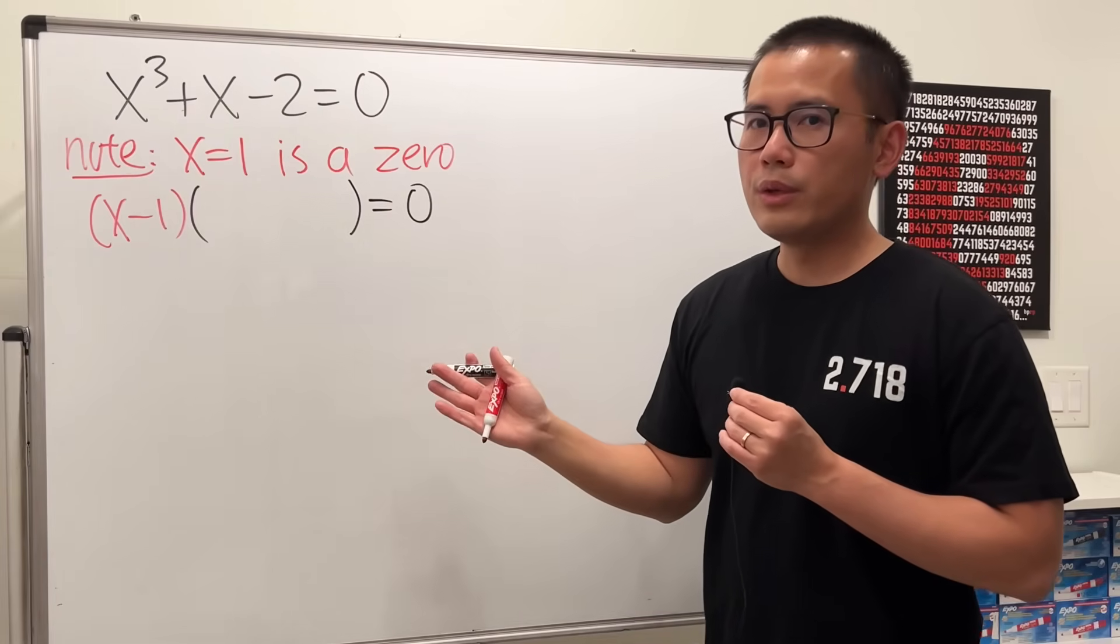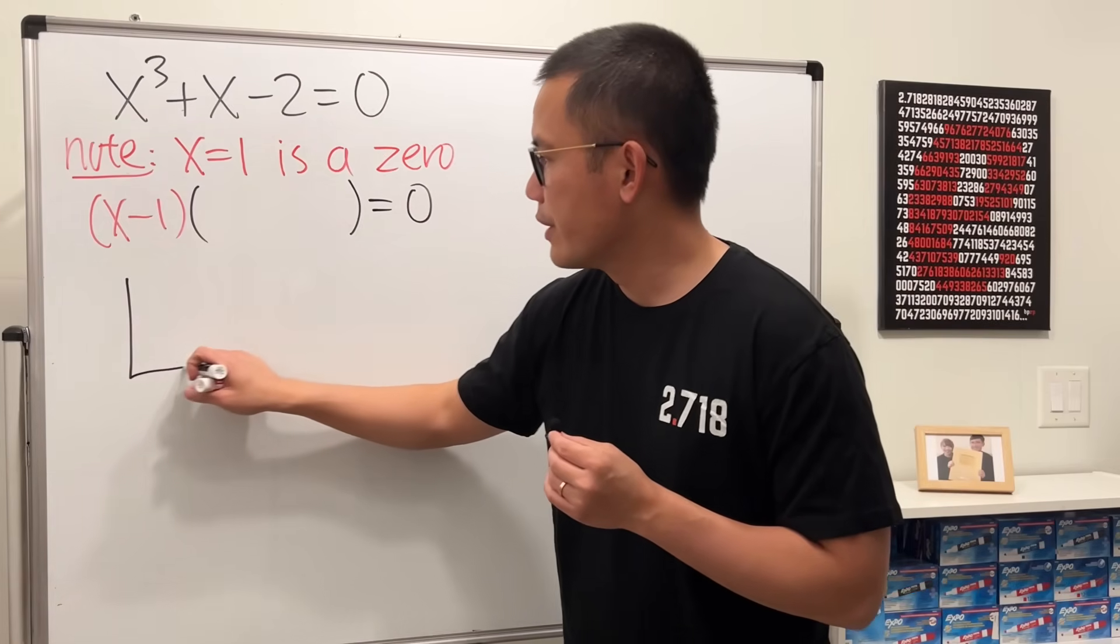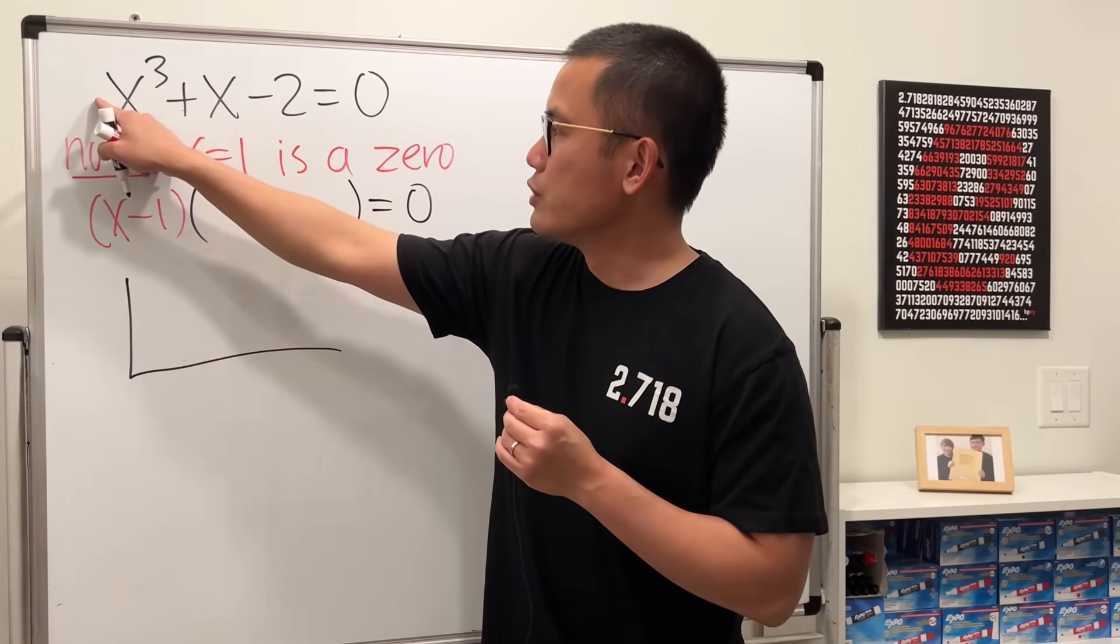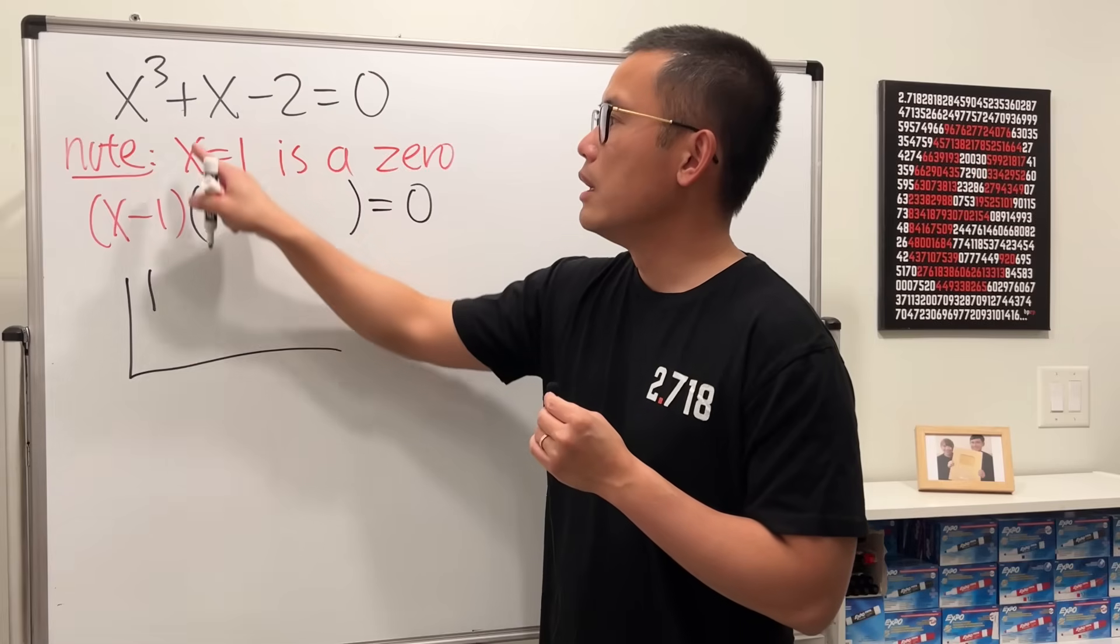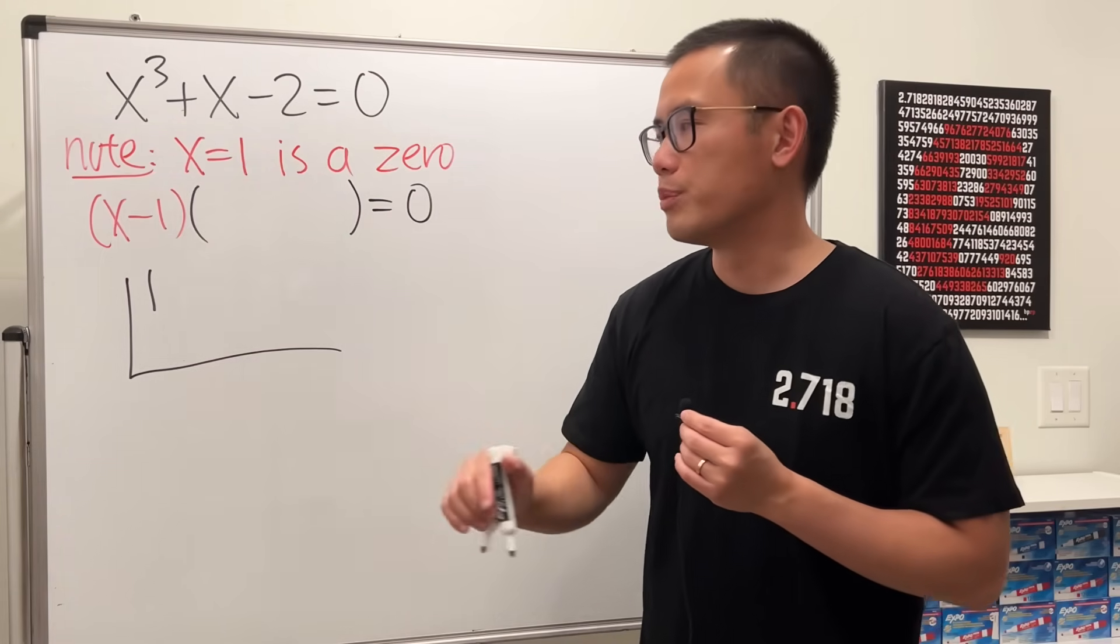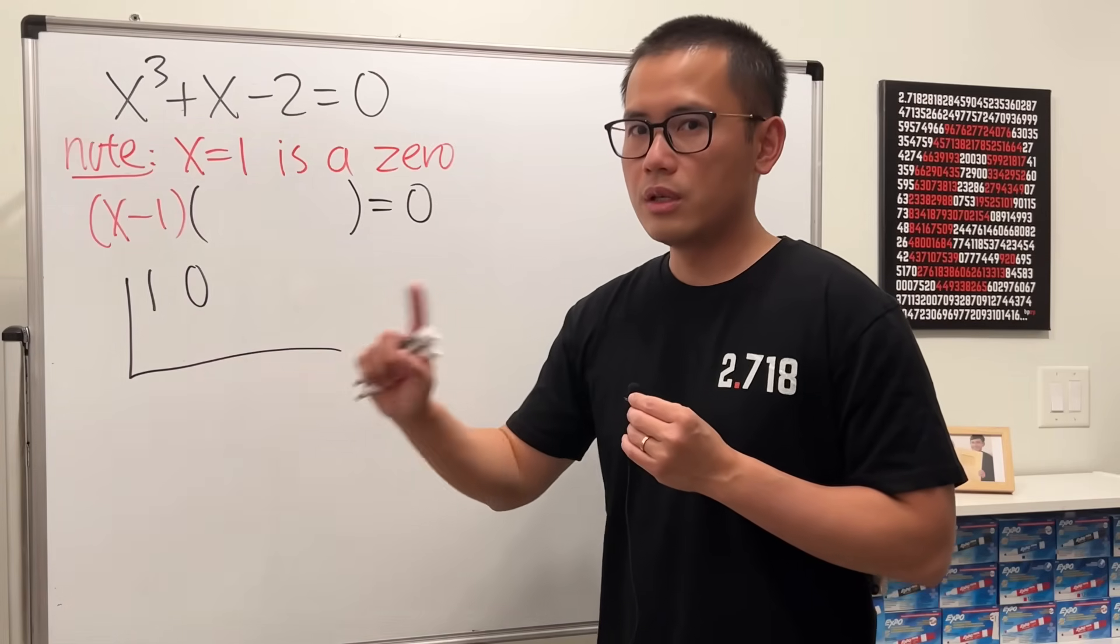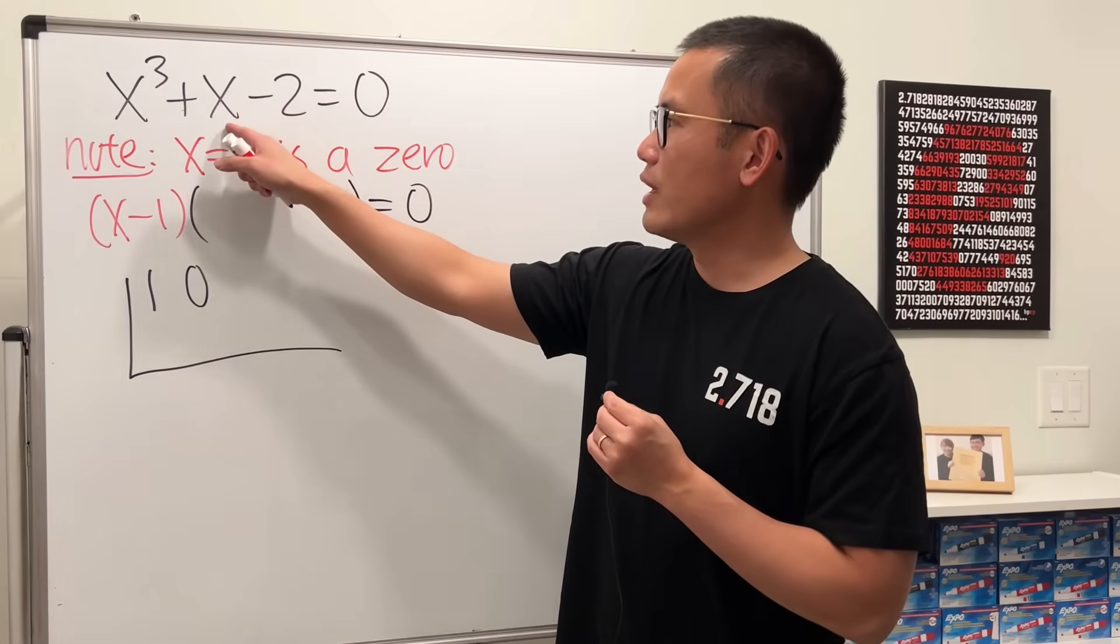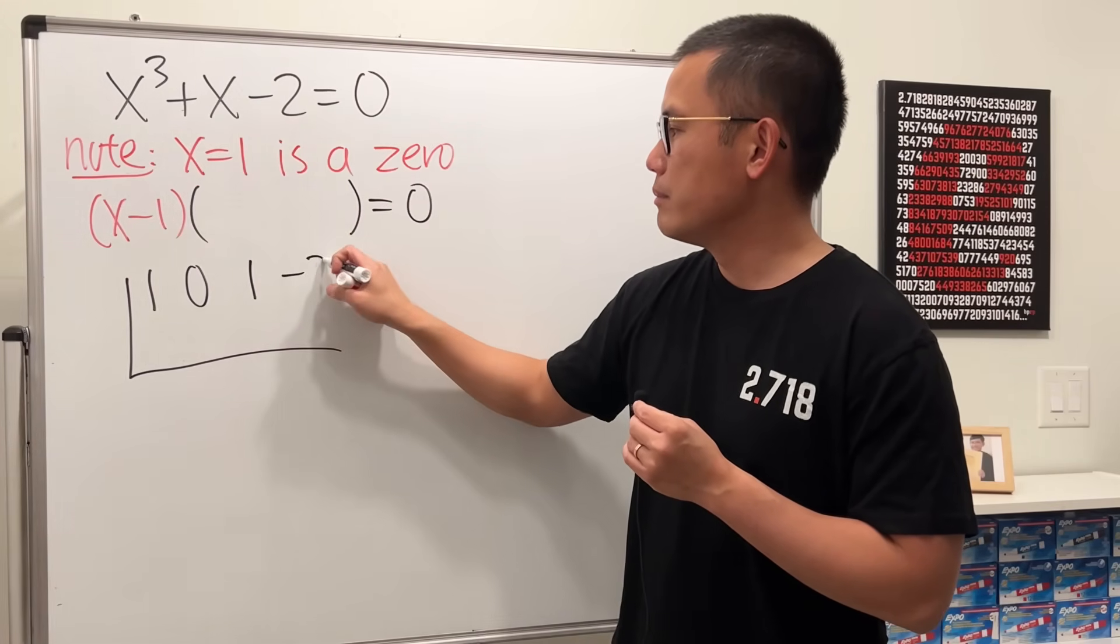We can do so by using the synthetic division feature. So here we go, go ahead and write down the coefficients, which is 1. We have x cubed, we don't have to put that down, but next we don't have x squared so we have to put down 0 for x squared. This is like the placeholder, we must have that. Next we have x to the first power and the coefficient is 1. Lastly we have minus 2.